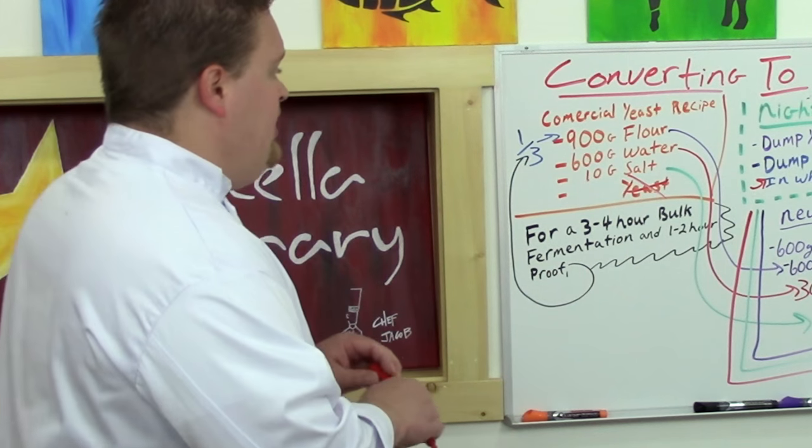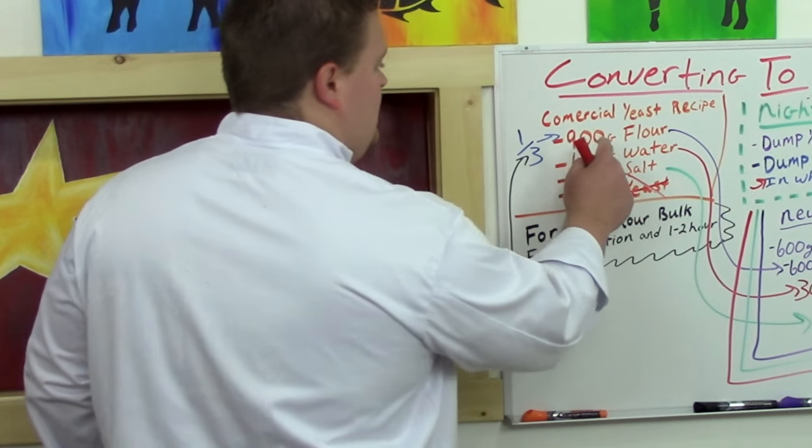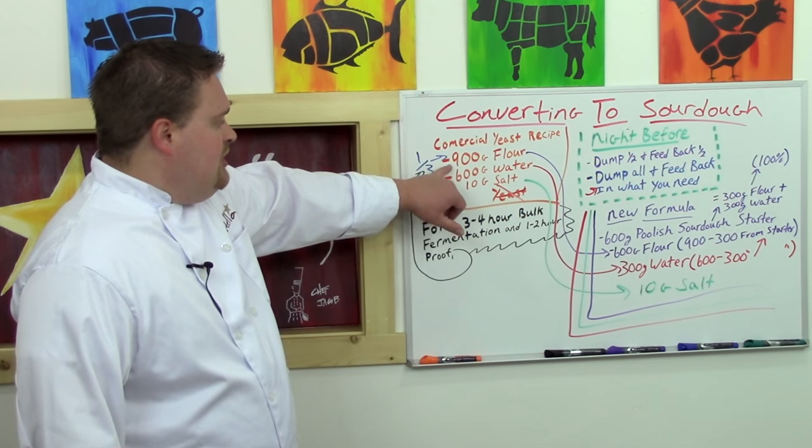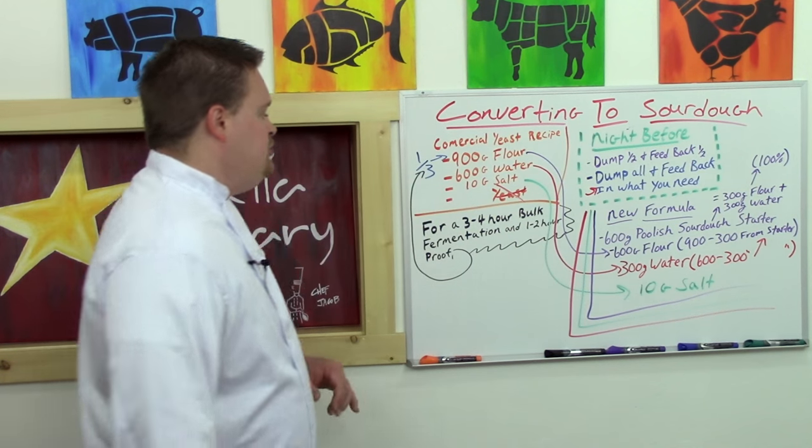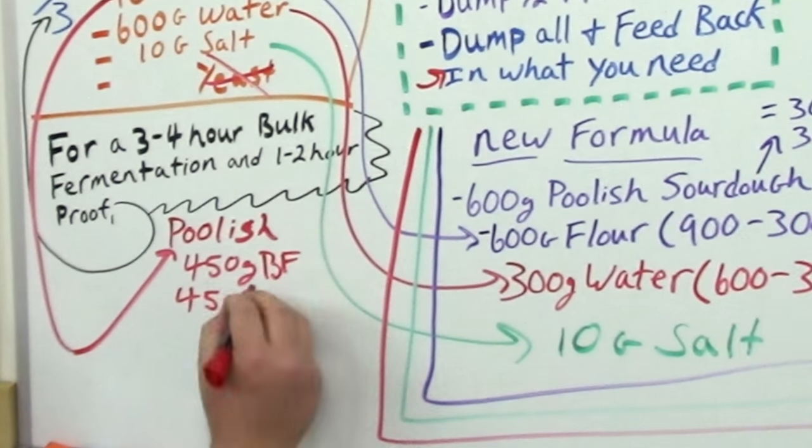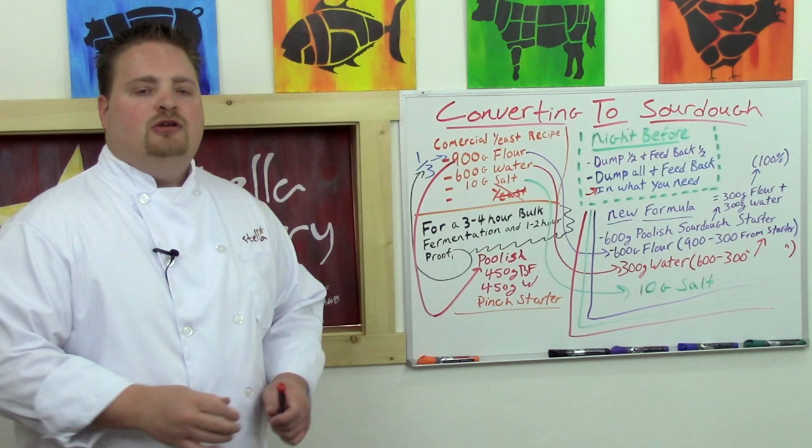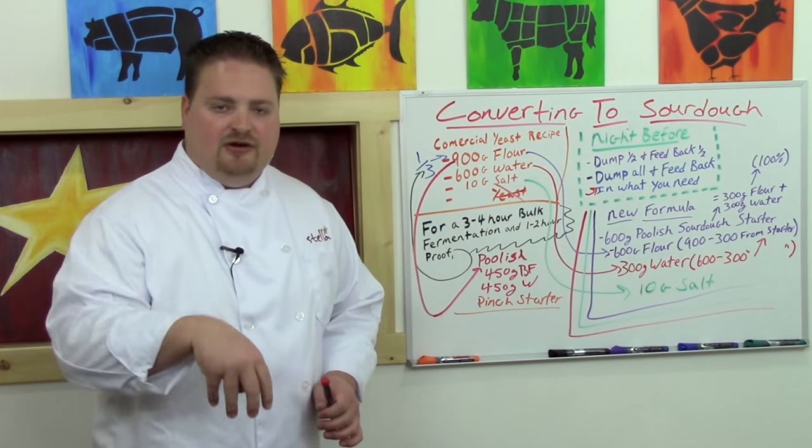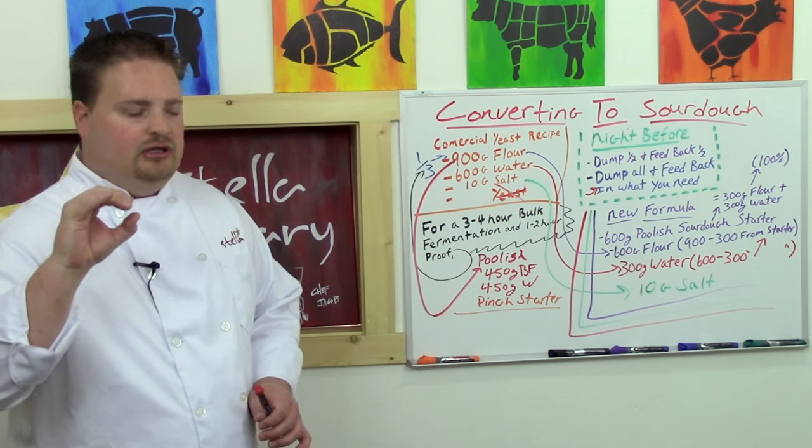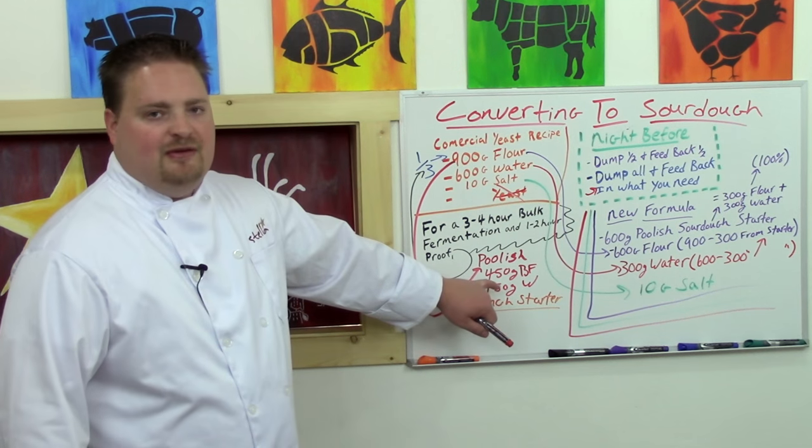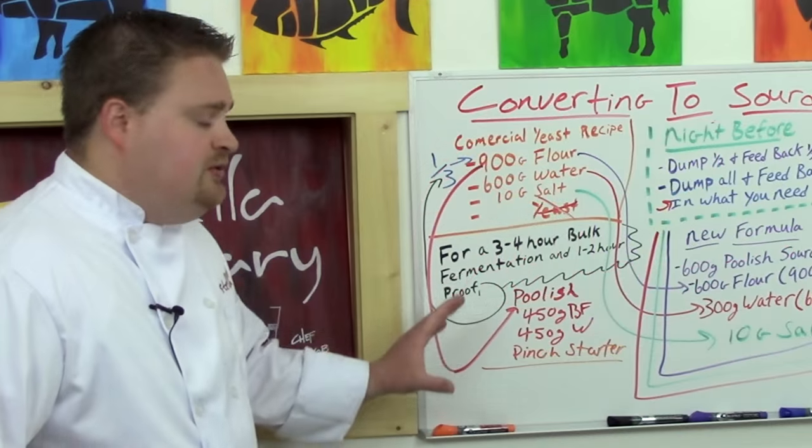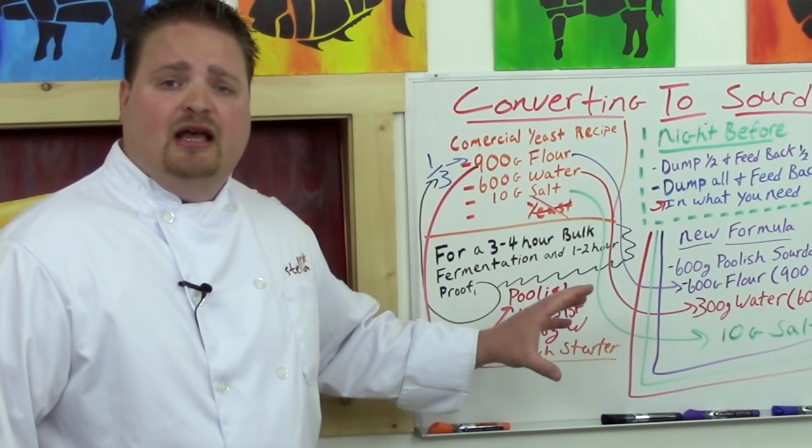So we have 900 grams flour, 600 grams water. You can do a poolish sourdough starter by drawing out 450 grams of flour and 450 grams of water, and then just a pinch of sourdough starter. You literally just dip your fingers into your sourdough starter, pull off whatever three or four fingers can hold, and then drop it into your 450 grams of water and 450 grams of flour.